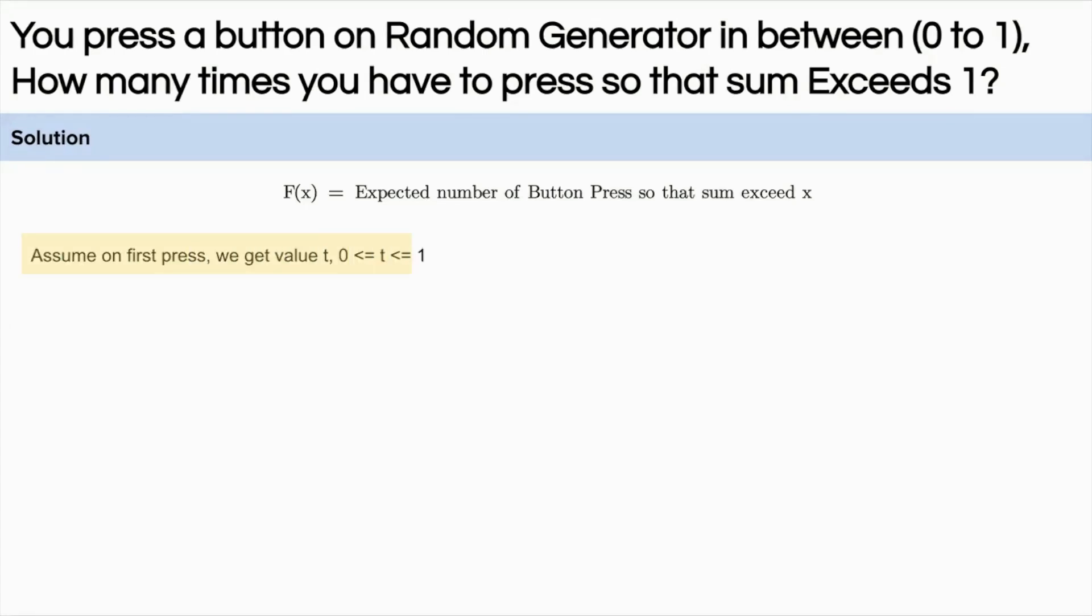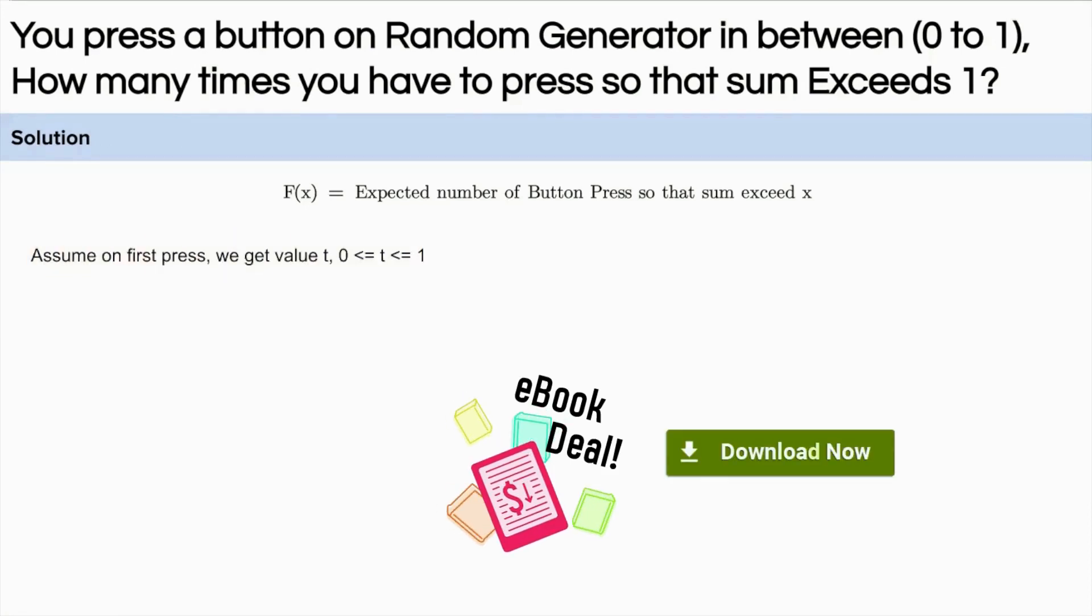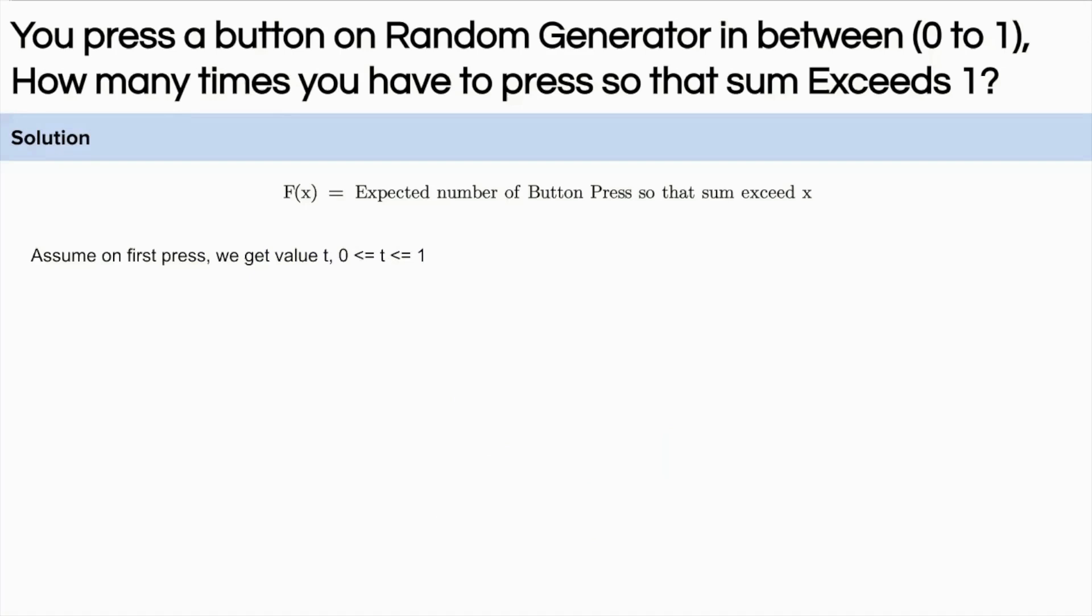Assuming that on the first press we get a number t, and this number will be between 0 to 1 because it is a random generator machine which generates a number between 0 to 1. Here we have already pressed one time and we got t. Now we need to calculate the number of presses to reach x minus t. Hope you are able to see how we have broken down the problem. So f(x) equals 1. Why? Because we have already pressed it once, plus we need to calculate the expected number of presses to get x minus t because we have gotten t in the first trial.